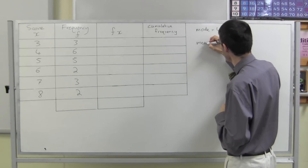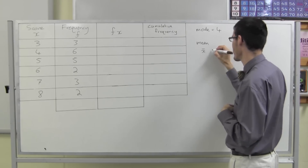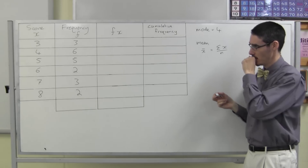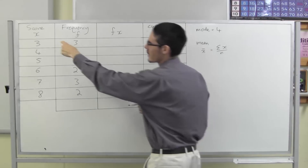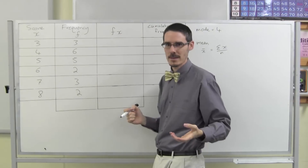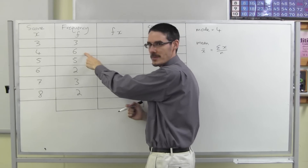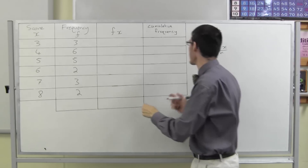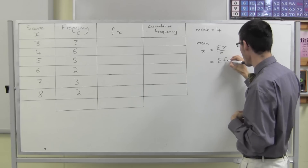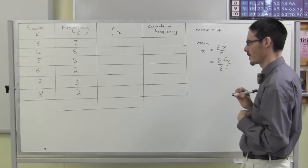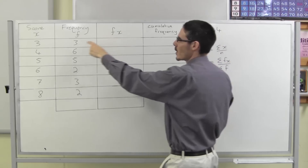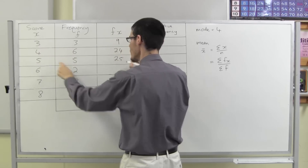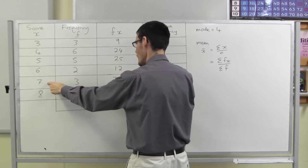Let's try the mean. The mean, which we write as x-bar, is the sum of the scores divided by the number of scores. But in this case I don't just want to go 3+4+5+6+7+8 divided by 6 — that would not be right, because in fact there are 3 threes, 6 fours, 5 fives, and so on. So I'll use the formula sigma fx divided by sigma f. Frequency times score: 3×3=9, 6×4=24, 5×5=25, 2×6=12, 3×7=21, 2×8=16.